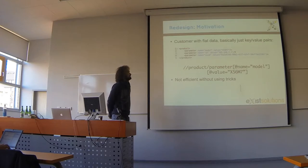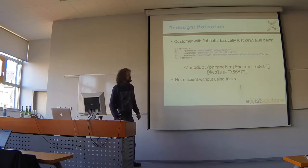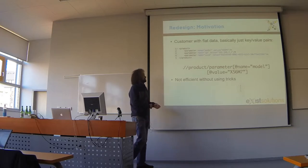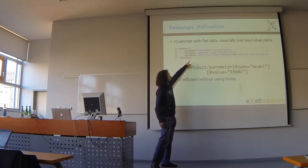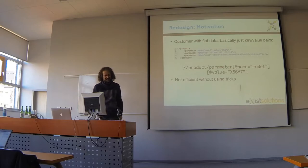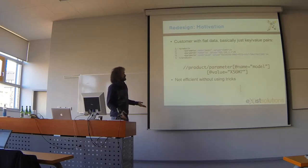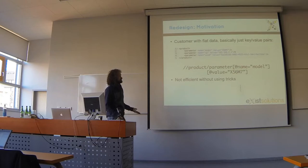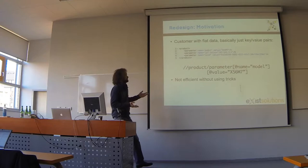Last year I finally had a customer who had major problems with this, because they had broader, flat data. It was a database containing phone information, and they basically stored it like this: lots of parameters with a name and a value — a very flat structure. They could have used some key-value store, but this data had to be combined with other data, so they didn't want to switch. When we were trying to optimize queries, we were successful but only by using lots of tricks.